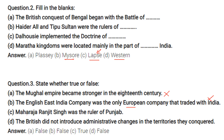Maharaja Ranjit Singh was the ruler of Punjab — this is true. The British did not introduce administrative changes in the territories they conquered — this is wrong.